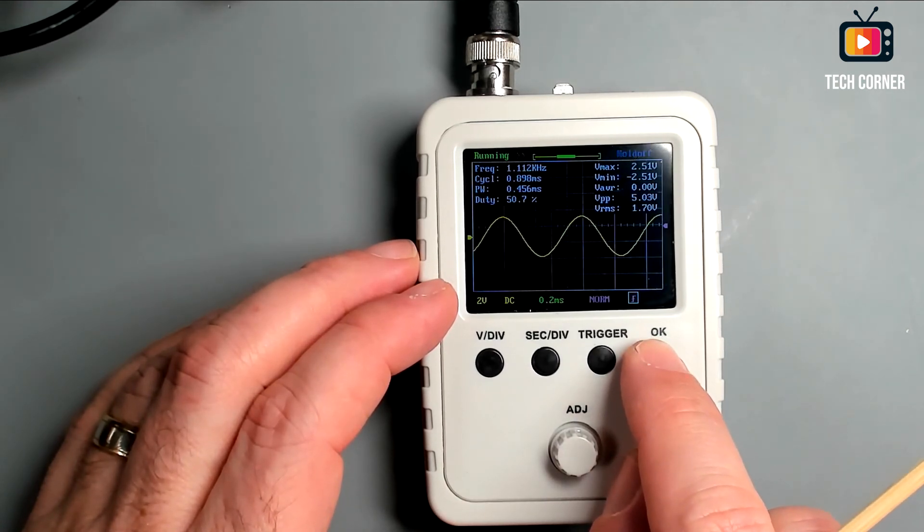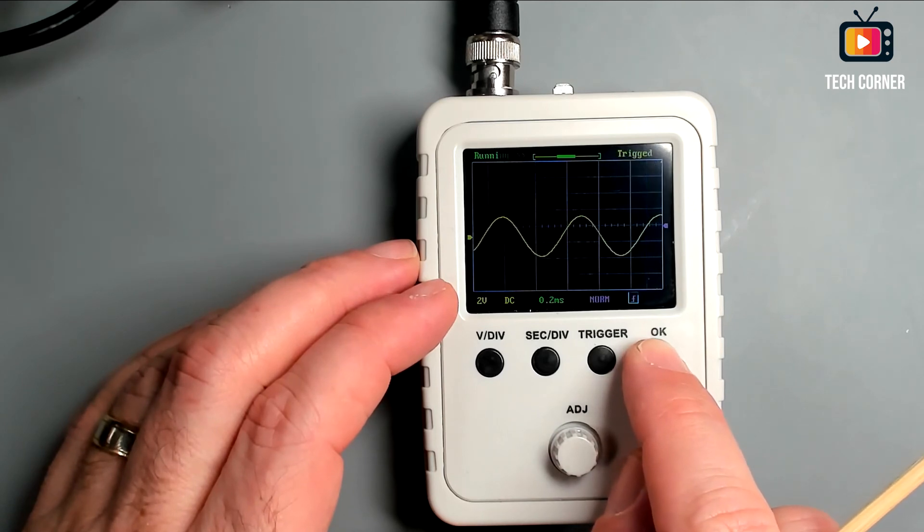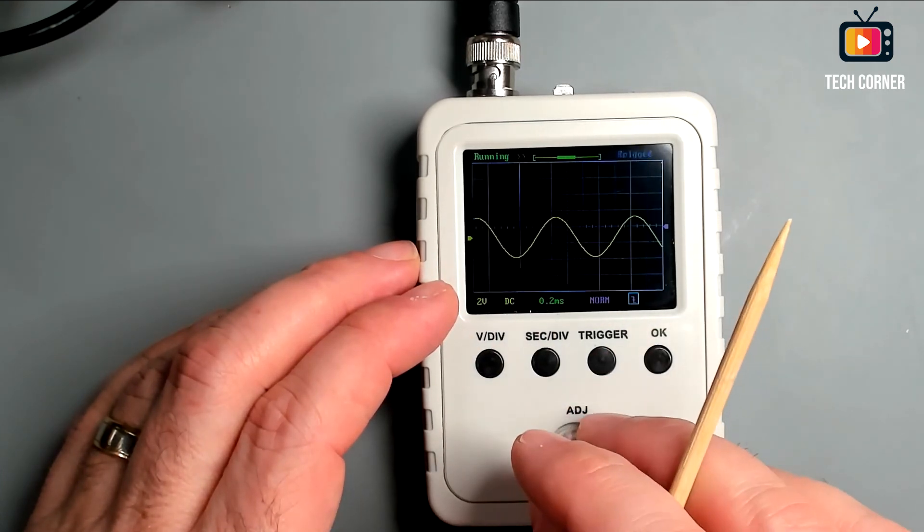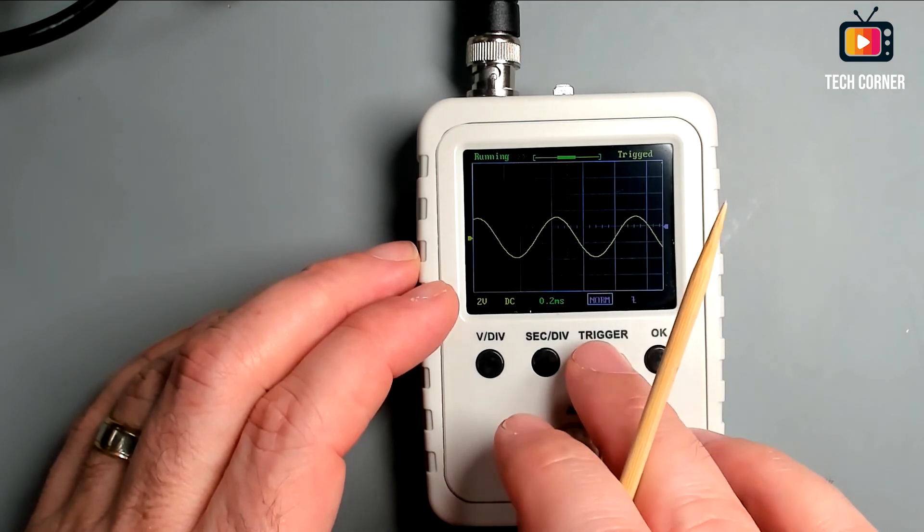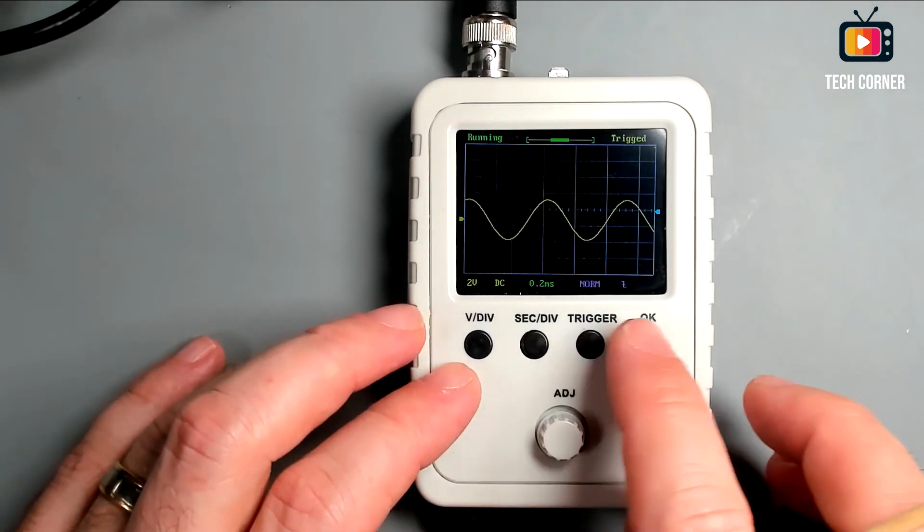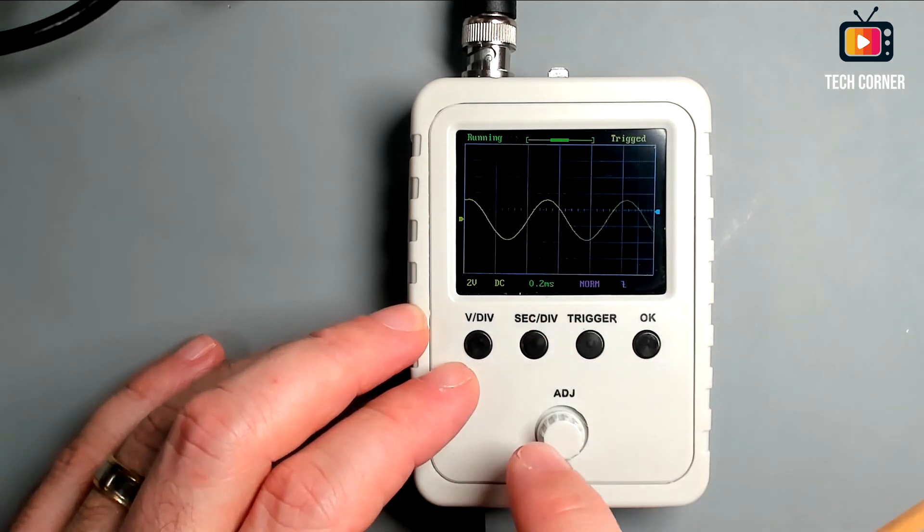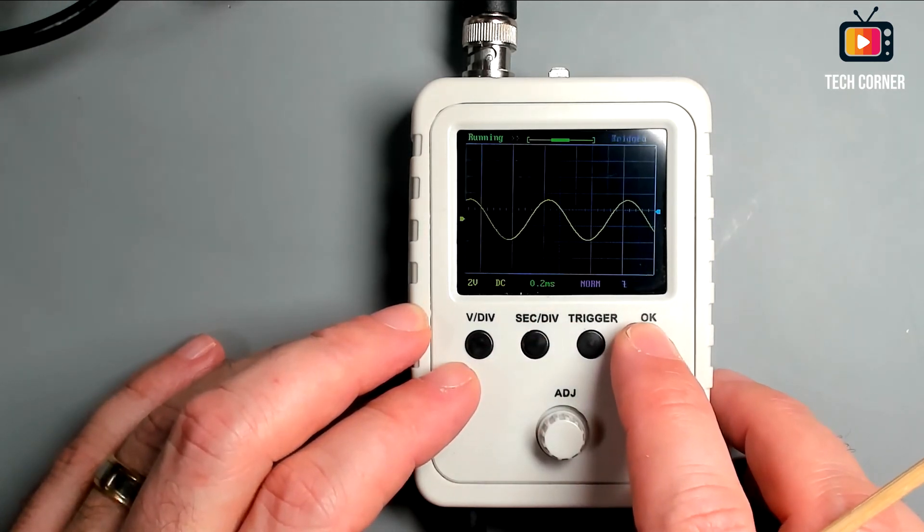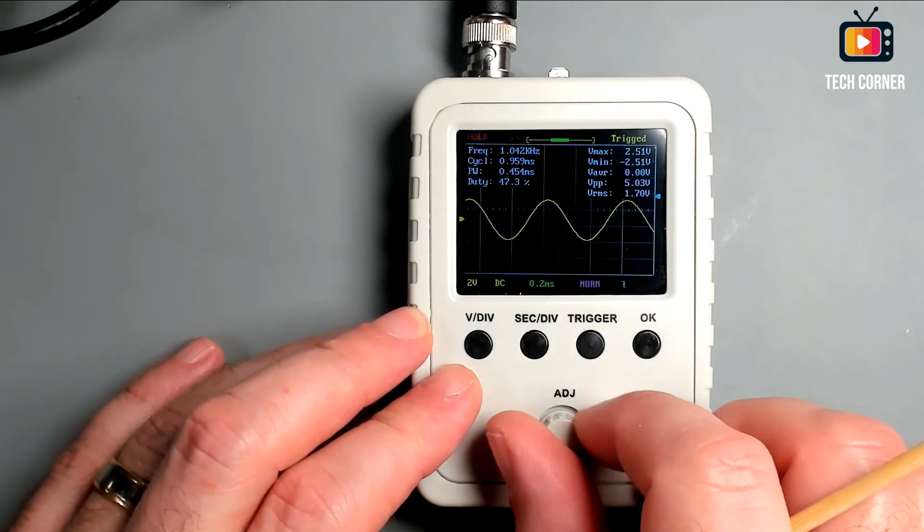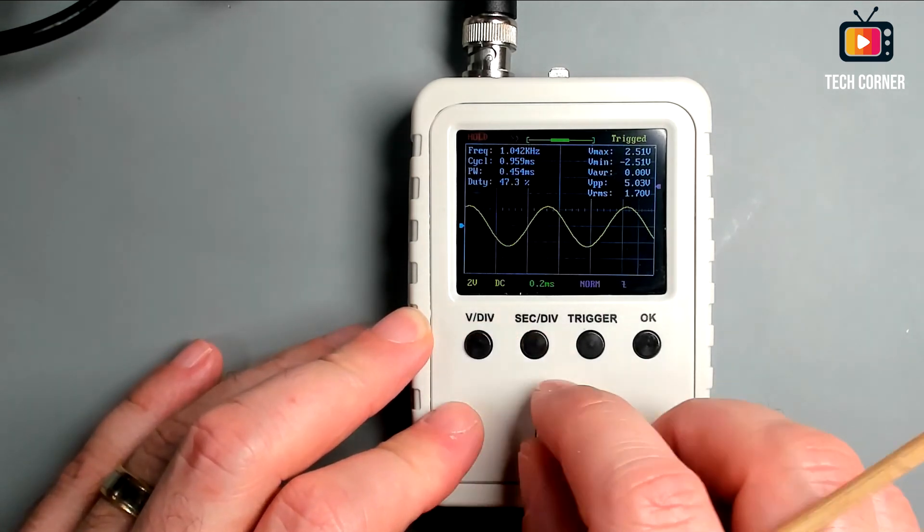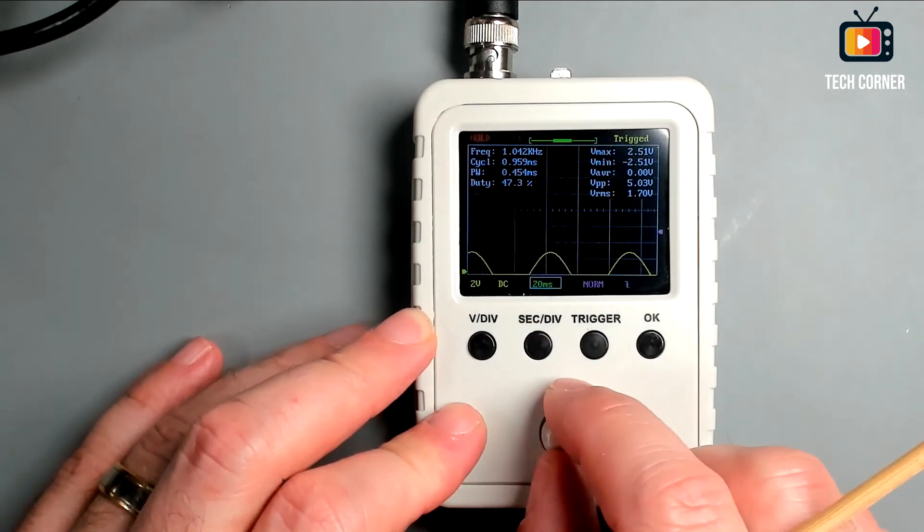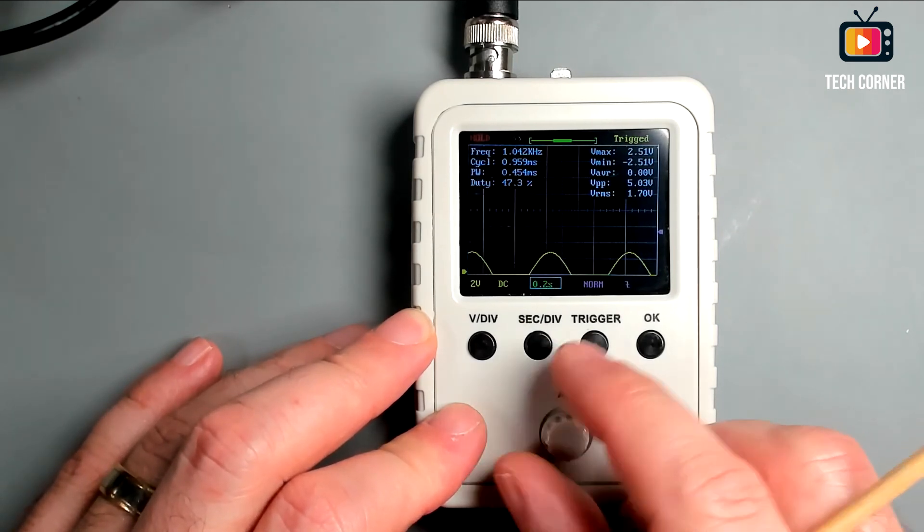So the last button is the OK that we already saw that runs the hold. And also if we press it for three seconds, it will disable the metrics from the screen. So we can have a clean screen to see the signal that is being displayed on the screen. We also have here some key combinations. For example, on the bench oscilloscopes, we have the auto button to reset the signal. It doesn't matter how bad you screw up the signal. Pressing auto, you will always have the signal reset.